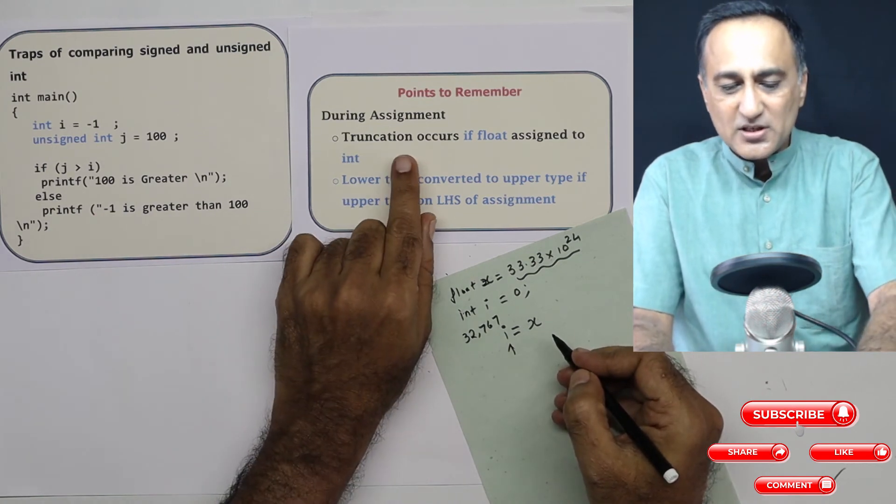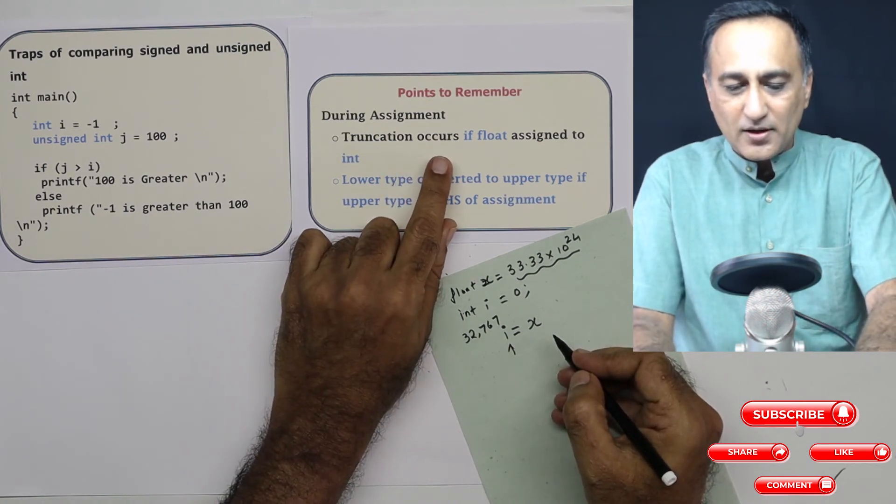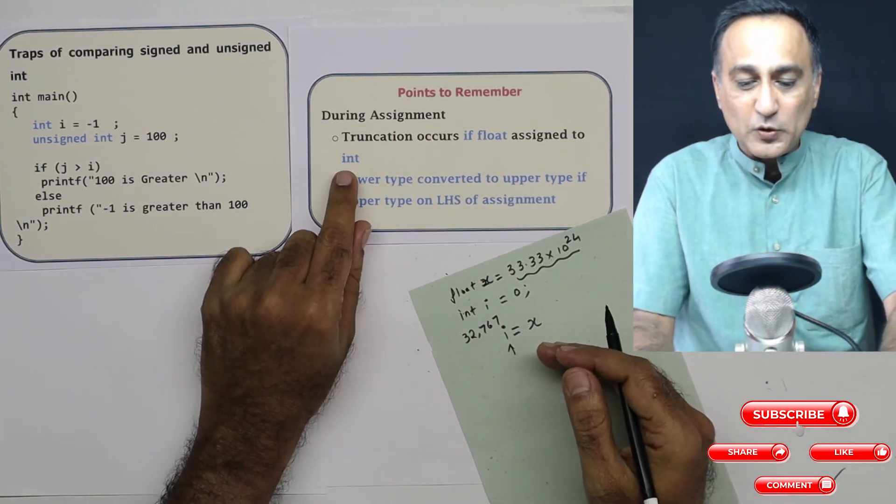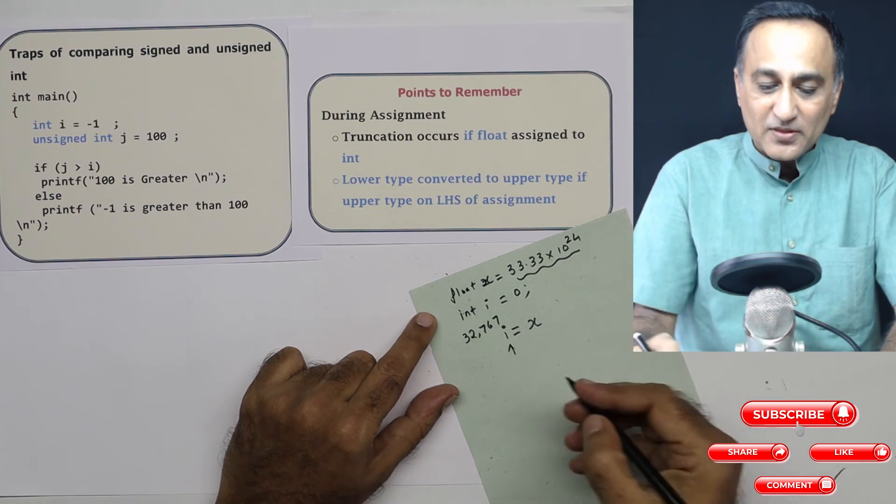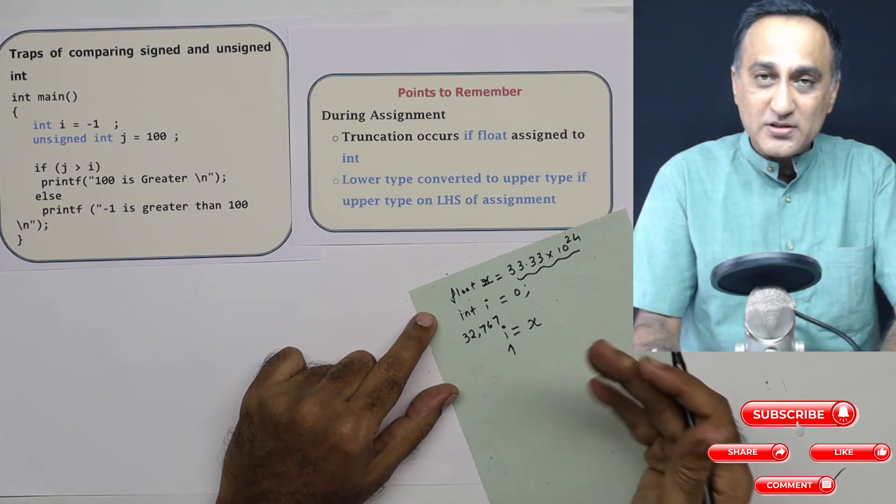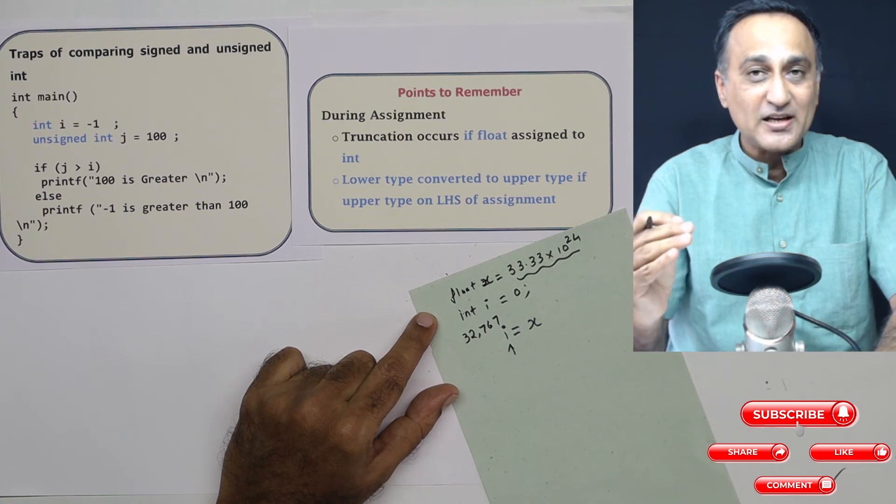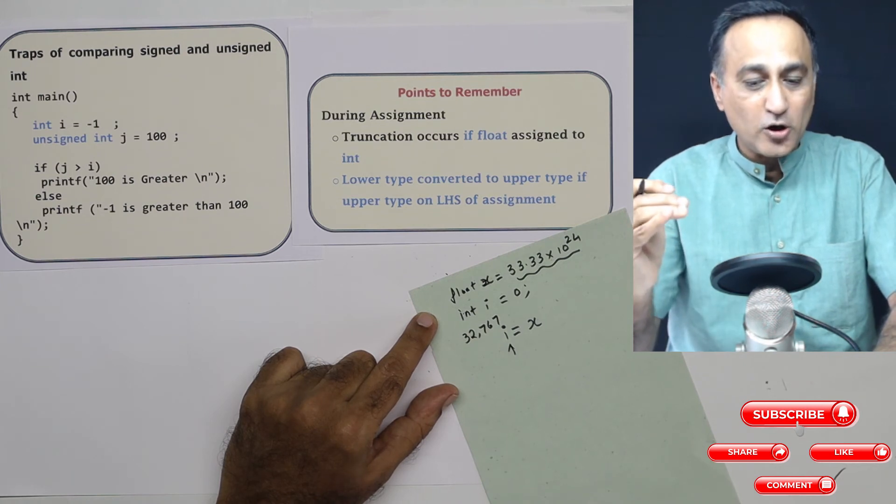So what it's trying to say is truncation will occur during assignment if a float variable or a higher data type is assigned to an int. Similarly, if you have a long long double and you assign it to a float, there is a good chance you may lose data because the data type of float is lesser than long long double.